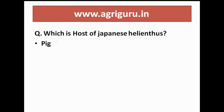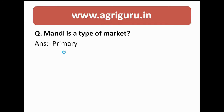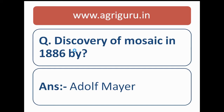Question number 28 is about Japanese encephalitis. Which is the host of Japanese encephalitis? The answer is pig. Question number 29: mandi is which type of market? The correct answer is primary market.